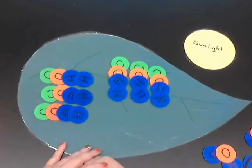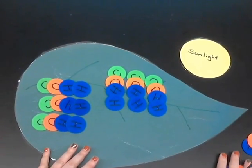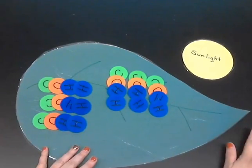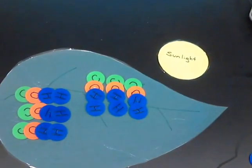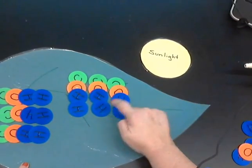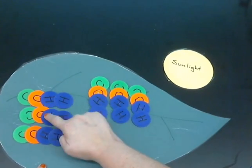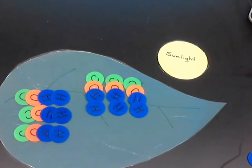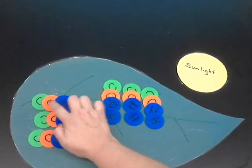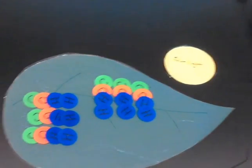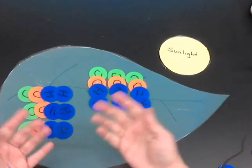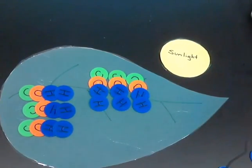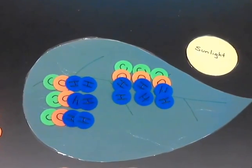Look at the atoms that remain on the leaf. How many carbon atoms are left? How many hydrogen atoms? How many oxygen atoms? What chemical can you make with these atoms? Which component of the formula does this represent?